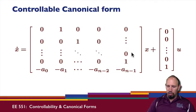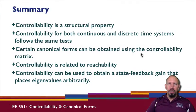We've looked at a number of tests for controllability. We've seen that controllability is a basic structural property of systems. That controllability for both continuous and discrete systems uses the same tests. And that certain canonical forms can be obtained using the controllability matrix. Controllability is also related to reachability. Controllability can also be used to obtain a state feedback gain that places eigenvalues arbitrarily. These are the main properties of controllability. Stay tuned for the proofs of some of these things.